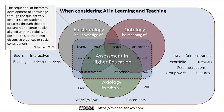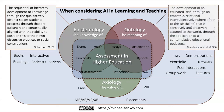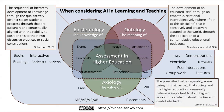The sequential or hierarchical development of knowledge to the qualitatively distinct stages students progress through — culturally and contextually aligned with their ability to position this to their own discursive practice or social constructs, says Richardson. Ontologies, on the other hand, is the development of an educated self to an empathic, relational, intersubjective sense of where I fit in this discipline — sensitively and creatively attuned to the world through the application of contemplative educational pedagogy. And then there's the prescribed value or the pedagogy, arguably some being intrinsic value, but that society and the higher education community believes important to do in higher education, or what it should be like and what it contributes back.